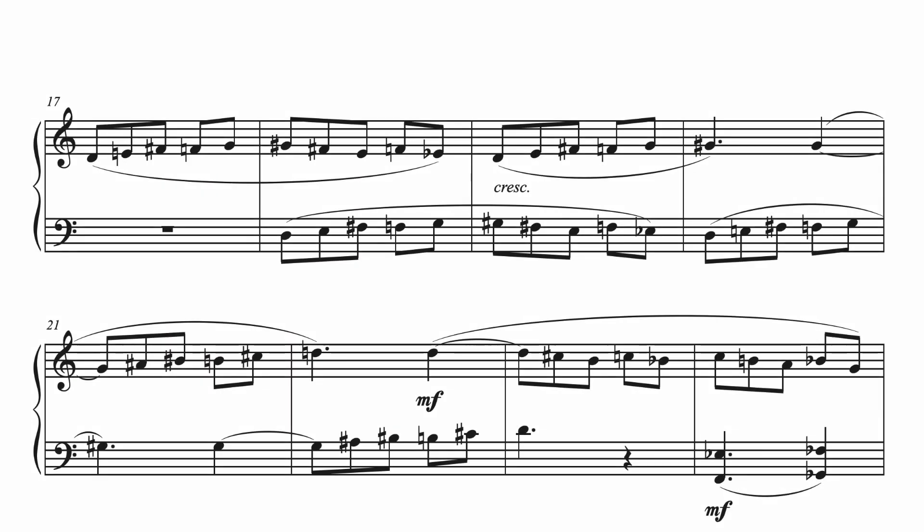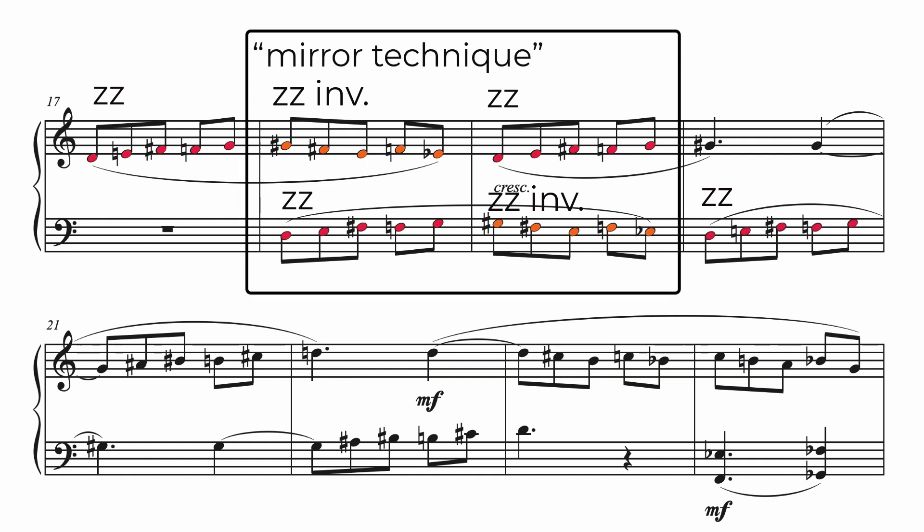Now, in this A prime section at measure 17, the pitch center is D, and motive ZZ returns at the D pitch level. Bartók presents the motive in close imitation at measure 18 in the left hand. And because of its symmetric structure, from D to the tritone G sharp, we have two measures of a mirror technique in measures 18 and 19. Mirror technique is when a line is presented simultaneously with its inversion, and it's a favorite technique of Bartók.